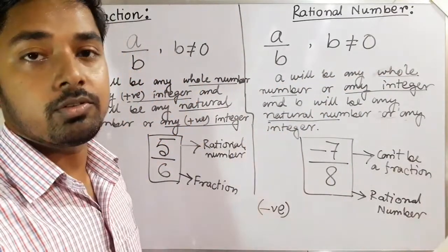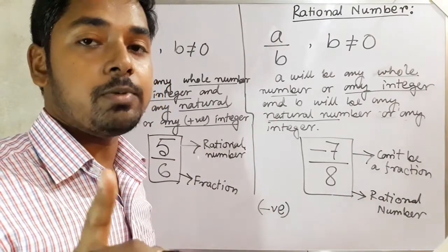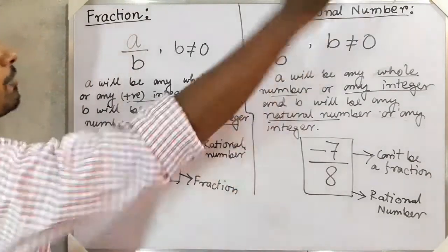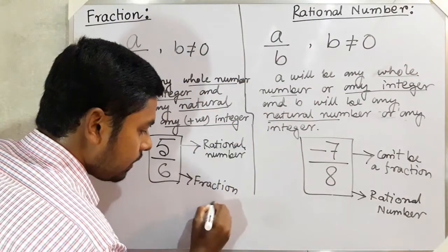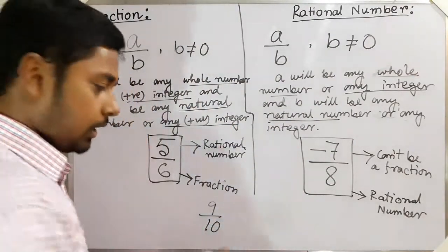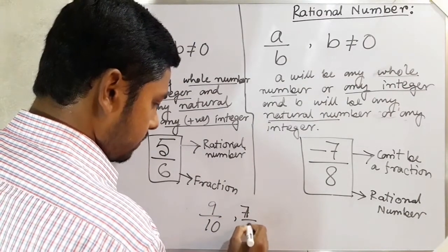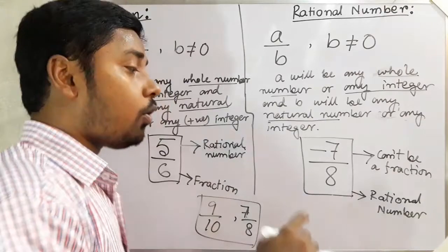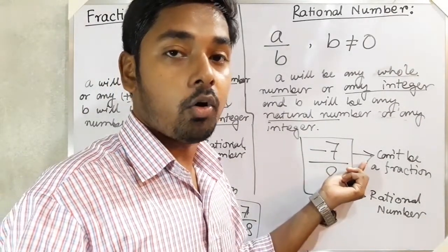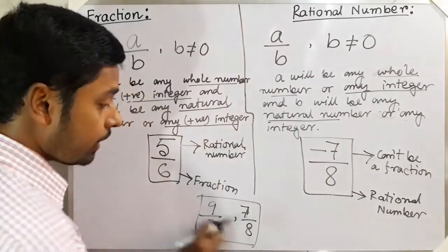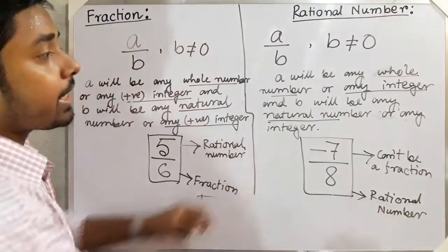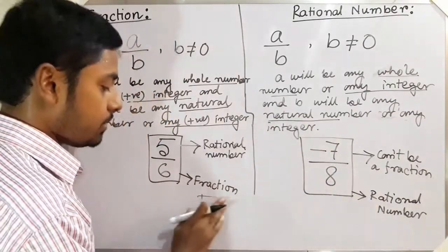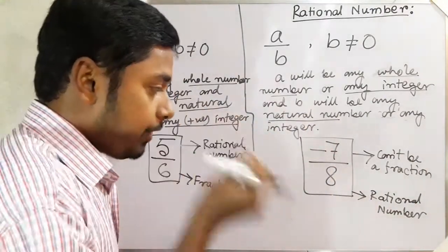This is the main difference between them: in a rational number you can take a negative integer, but in a fraction you cannot. So all fractions — for example 9/10 or 7/8 — are rational numbers also, but all rational numbers are not fractions, because in a rational number we can take a negative integer.